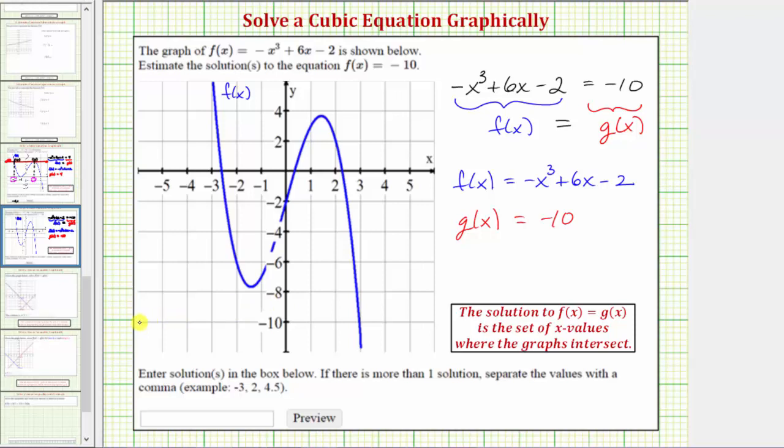So the graph of g(x) looks like this, and notice how the graphs of f(x) and g(x) only have one point of intersection, this point here.